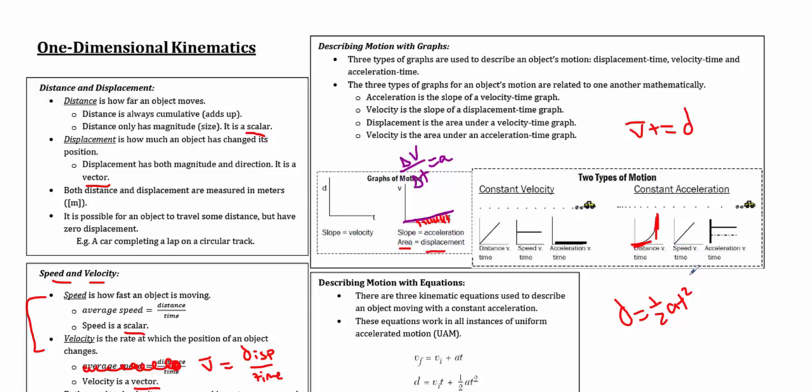A speed time graph represents acceleration. Again, constant acceleration. That means we're going to have a constant slope. Finally, an acceleration time graph, we're going to have a horizontal line representing the value of that acceleration when we get there.